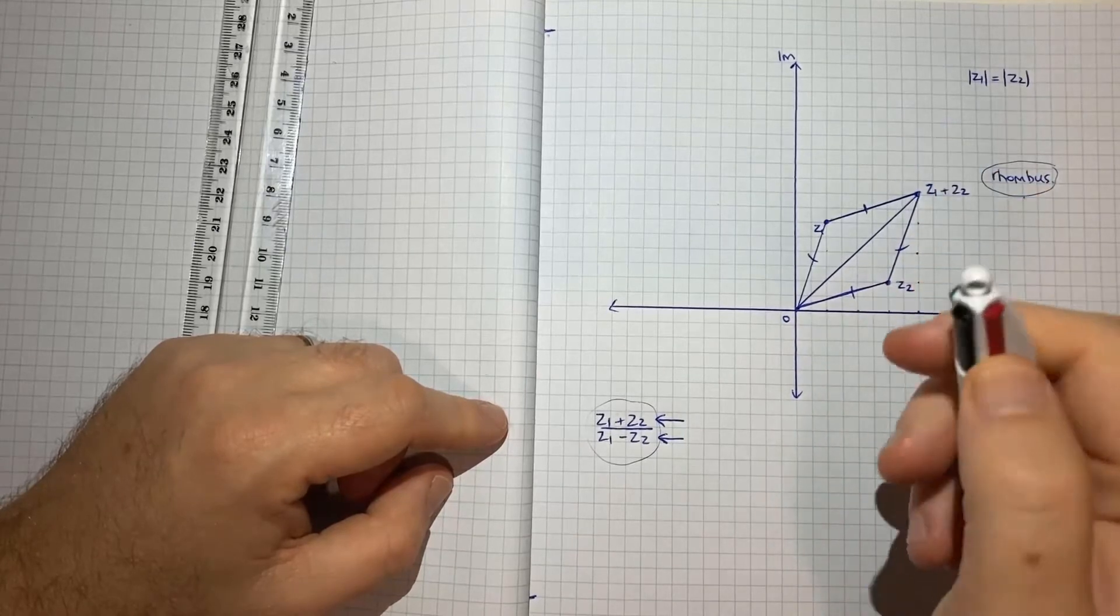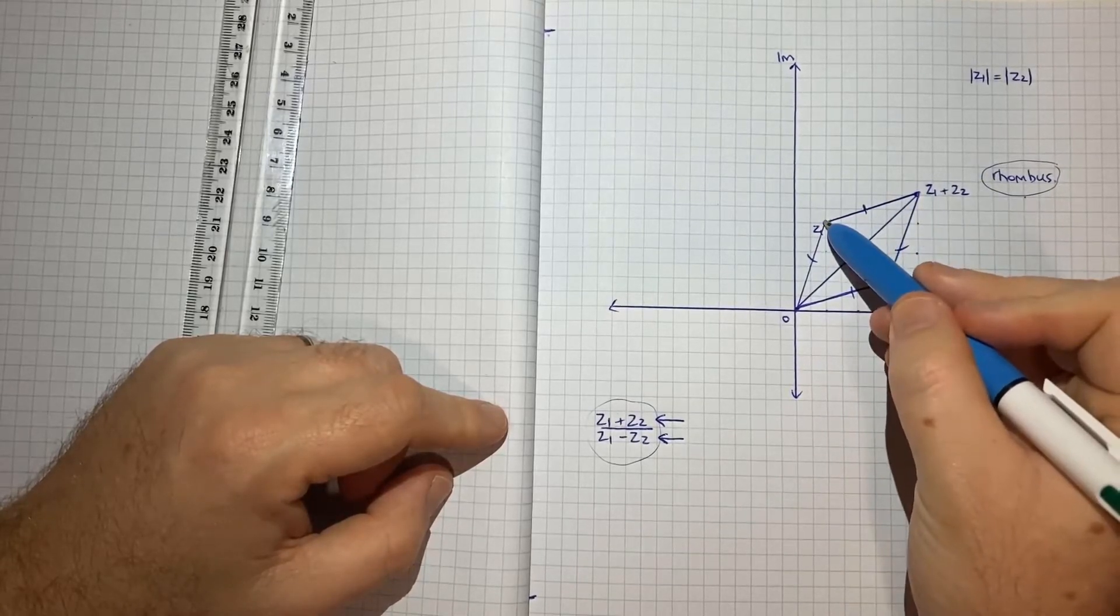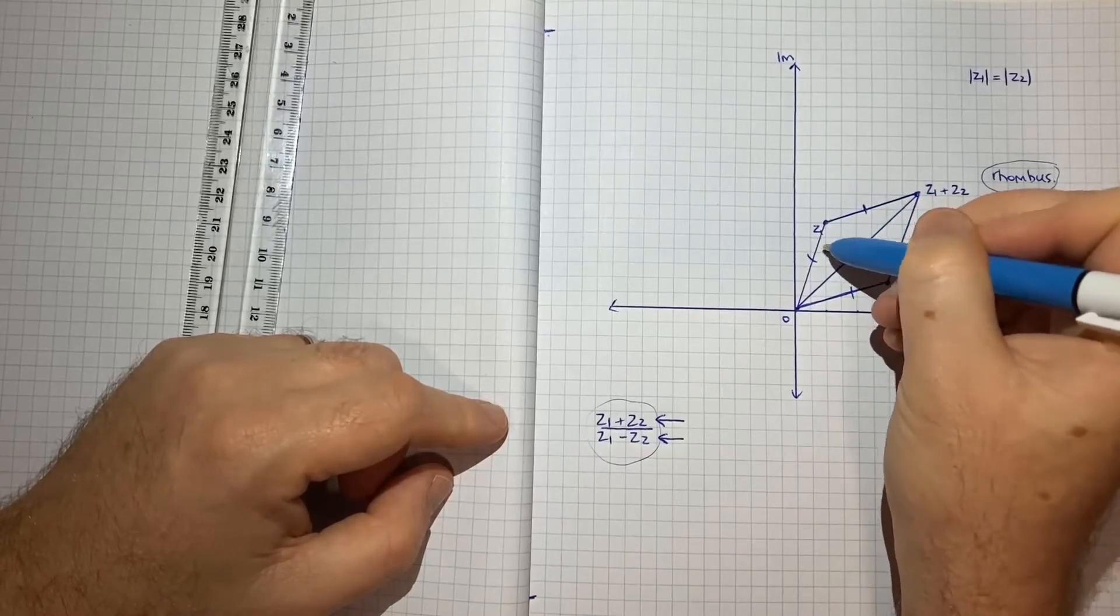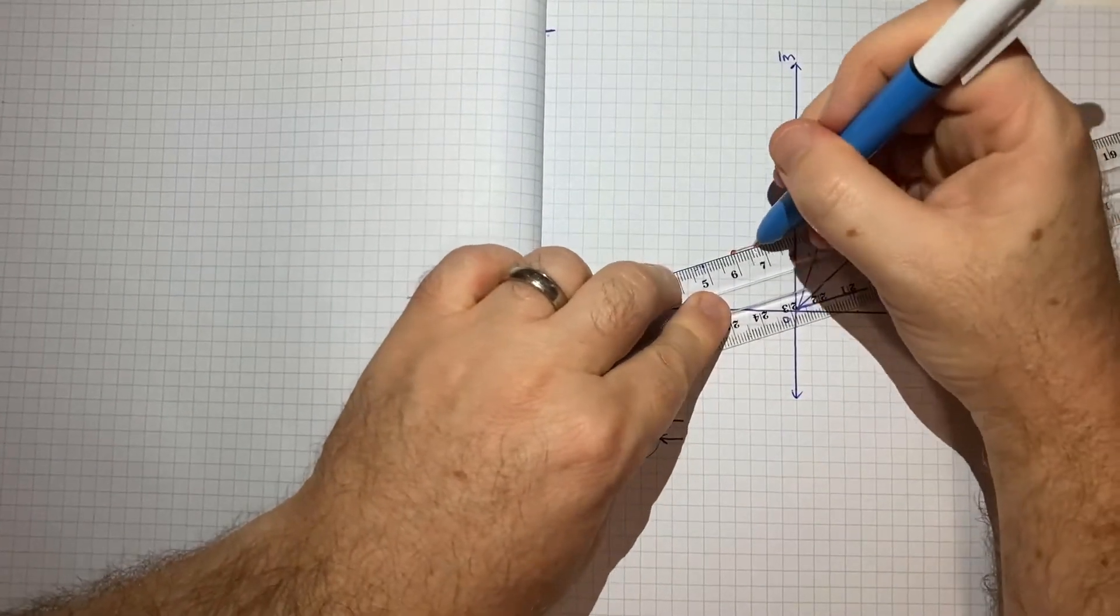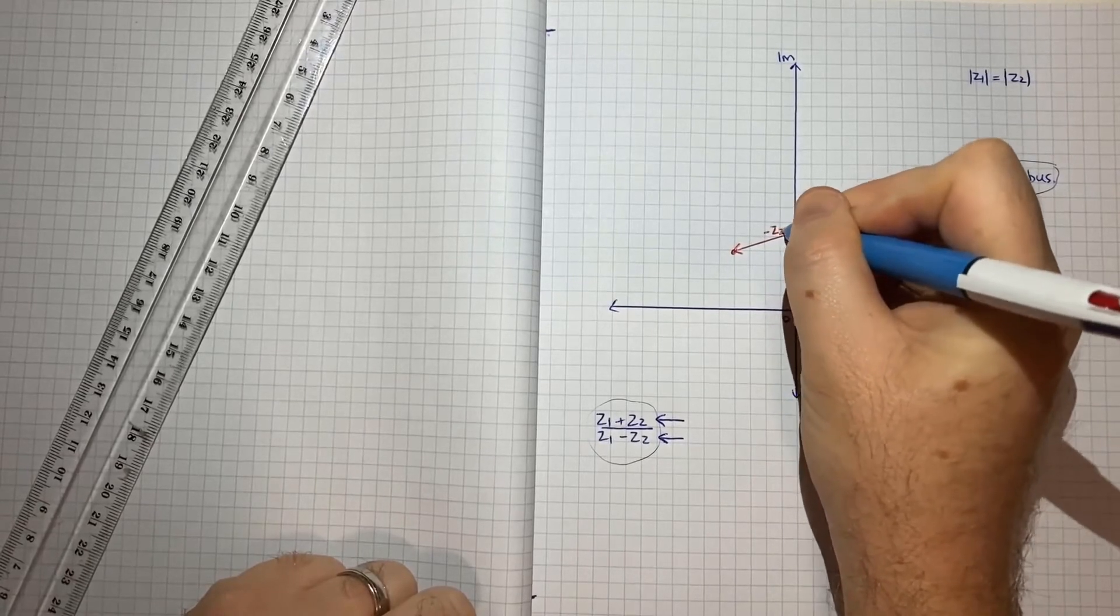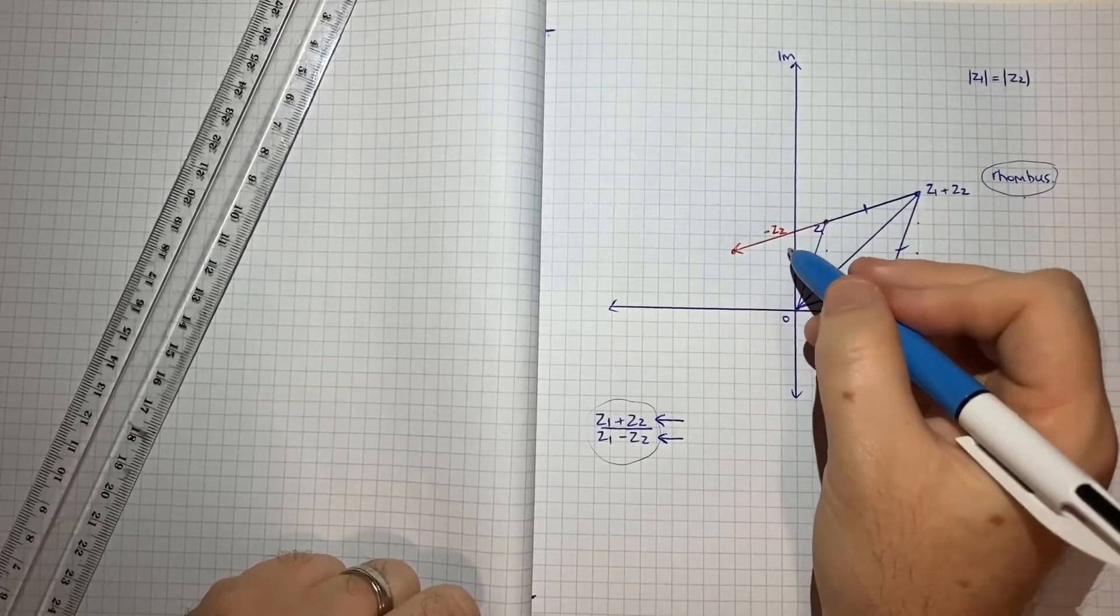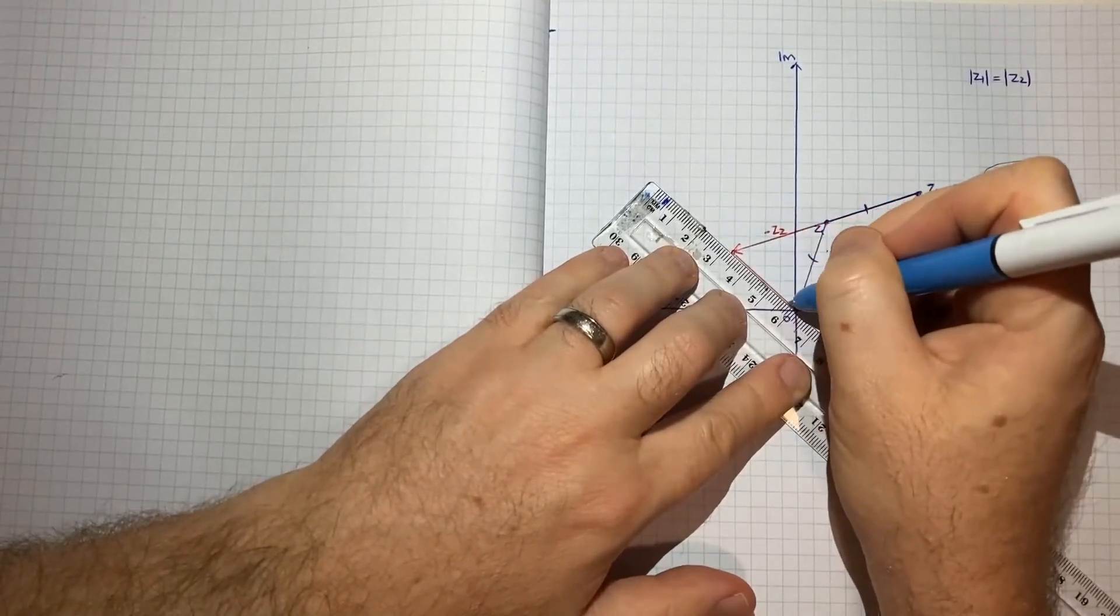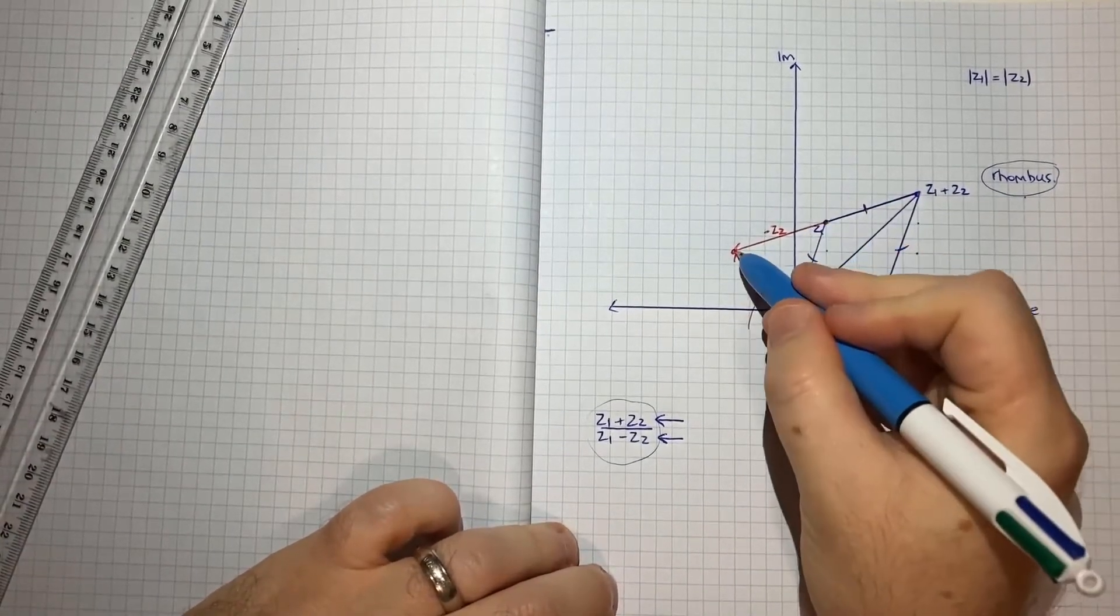So what we can do is if we start from z1, rather than moving over to z1 plus z2, let's see what happens when we effectively subtract z2. So if we come down 2 and back 6: 2, 4, 6. So if I draw that point there, what I've effectively done in coming here is I've subtracted z2. That's effectively the vector, it's the same as the vector z2 but I've gone the opposite direction, so it's effectively negative z2. So if I start from the origin and come from there to this point here, that vector there is essentially z1 minus z2.